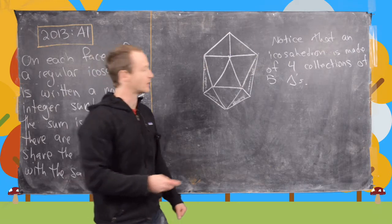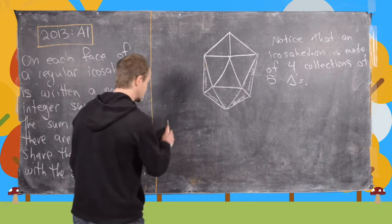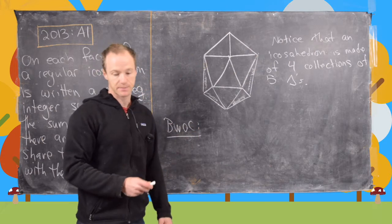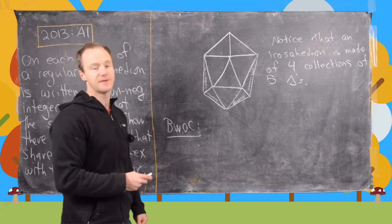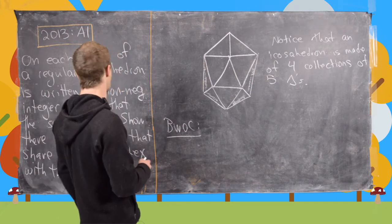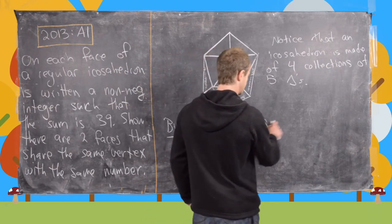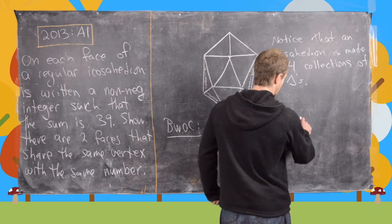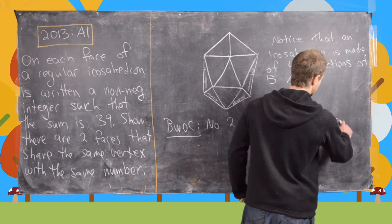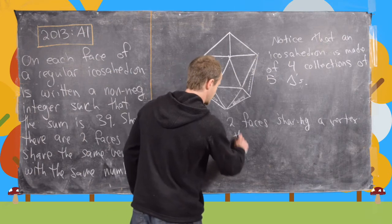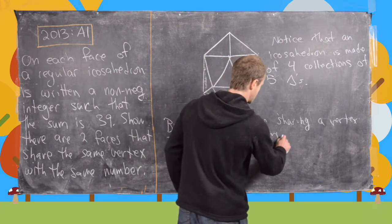And now the next thing that we want to do is towards a contradiction. So by way of contradiction, let's suppose that no two faces sharing a vertex have the same number.